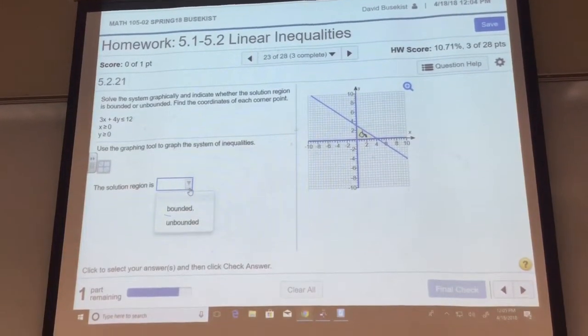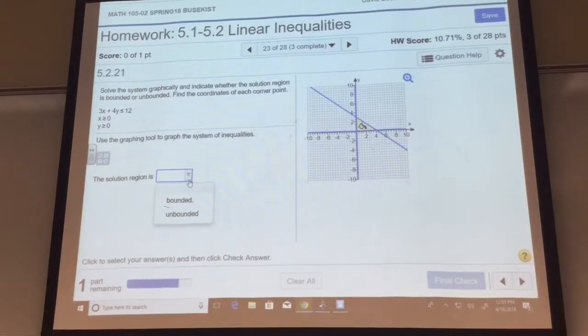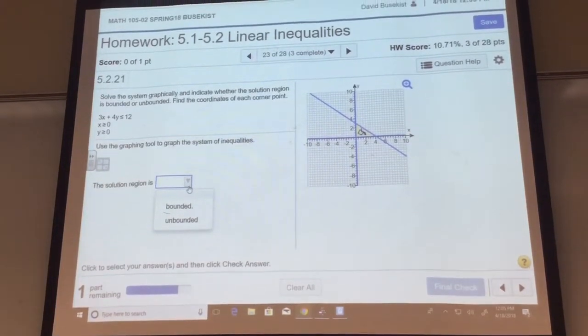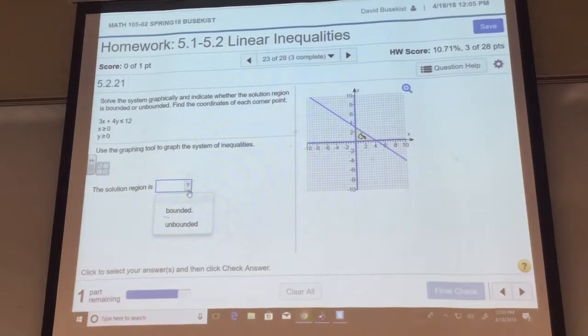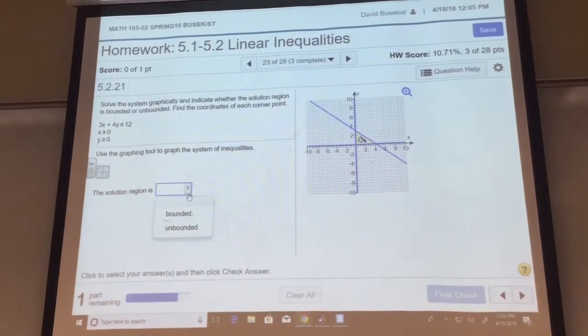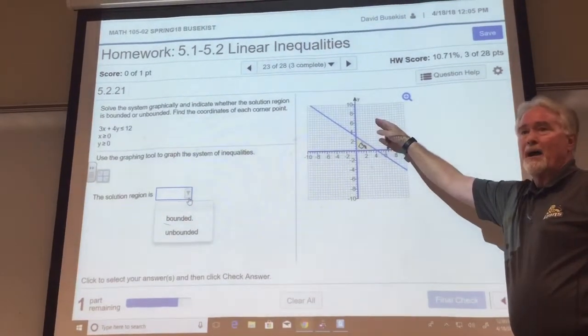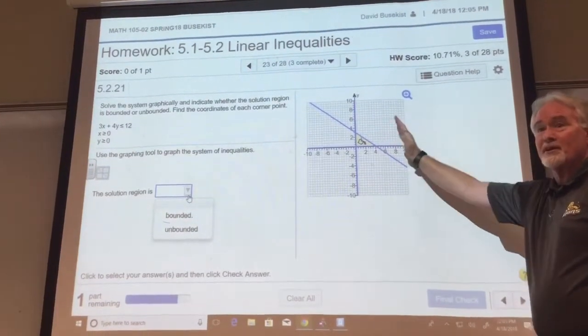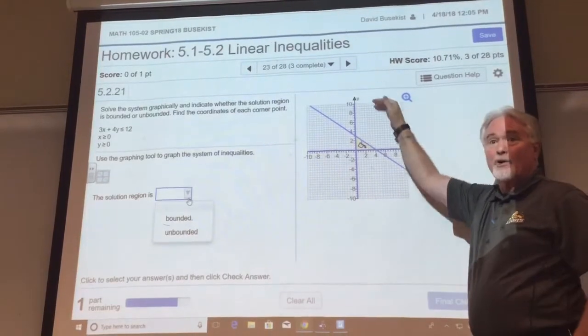Now, is this shaded region bounded or unbounded? A bounded region is a closed region that has a blockage it can't get outside of. This is a bounded region. This is not a bounded region because does this area continue to go out to the left or right and go up?